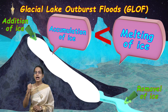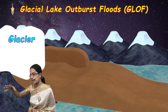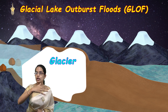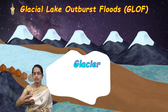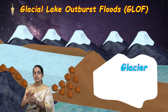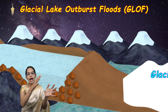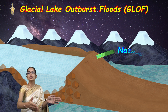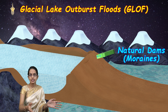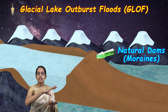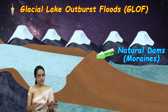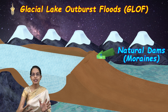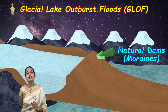Under certain conditions, the process of removal is greater. As the glacier slowly and gradually moves, it leaves sediments behind in the form of boulders, clay, sand, and gravel. These keep depositing as the glacier moves forward, creating a natural dam. These are what we call moraines.